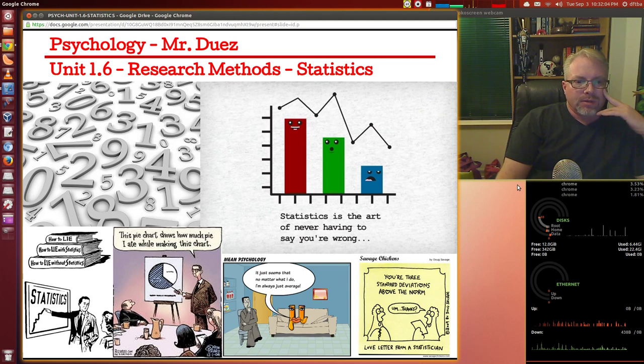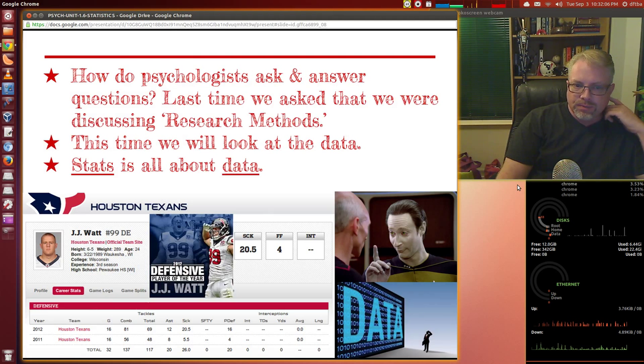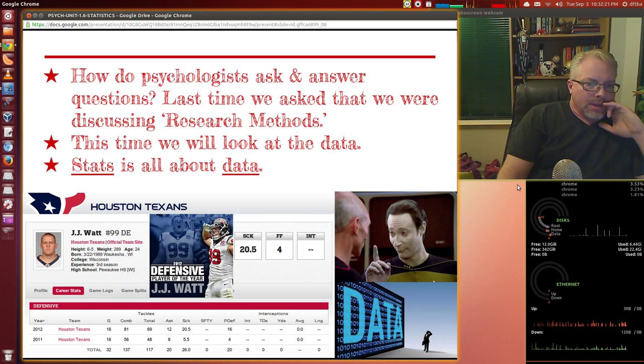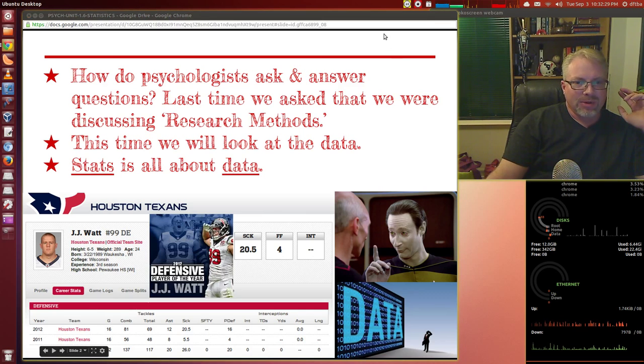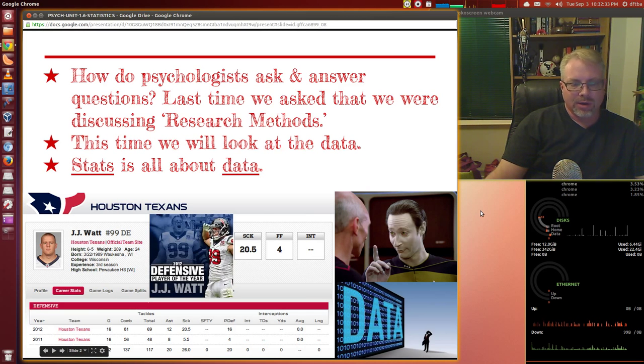You have to be careful with statistics and with research methods. A lot of times we're taking a small segment of the population, a sample, and then trying to infer an overall effect on the population. That's called inferential statistics. We're going to look at that in a second. We're going to start first with descriptive statistics. How do psychologists ask and answer questions? This time, we're going to look at data. Not this Data from Star Trek world, but the data that you would get if you were going to study and look at a research project.